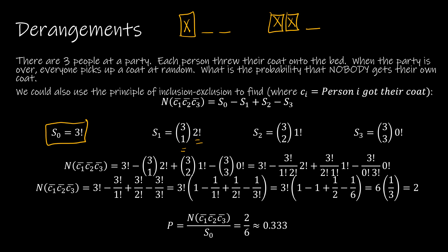And then lastly, if I set all three, then there are no coats left to permutate, so zero factorial.